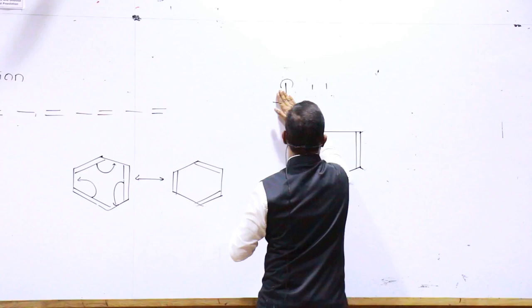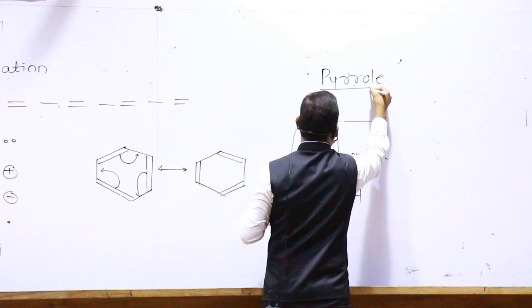How are you saying pyrrole? What's happening? How are you saying pyrrole? Pyrrole, how are you saying that lone pair conjugation are you?